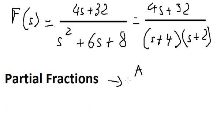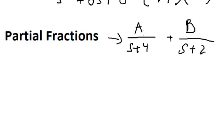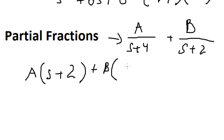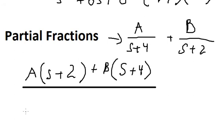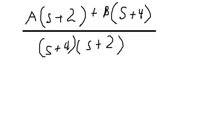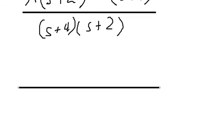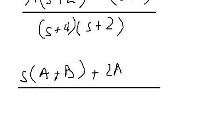So we move to A over (s+4) and B over (s+2). We will have A multiplied with (s+2), and B multiplied with (s+4). So we have (s+4)(s+2). Now we arrange based on the terms of s: for the s-term we have A plus B.